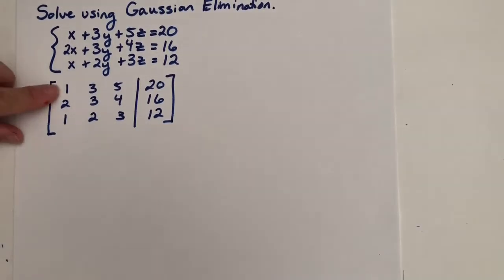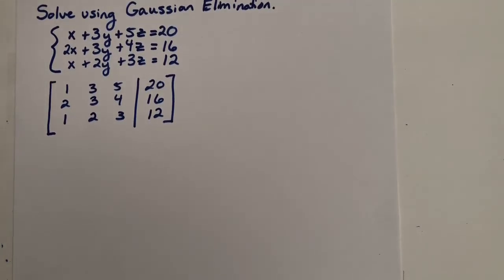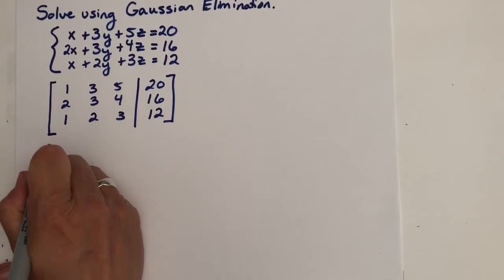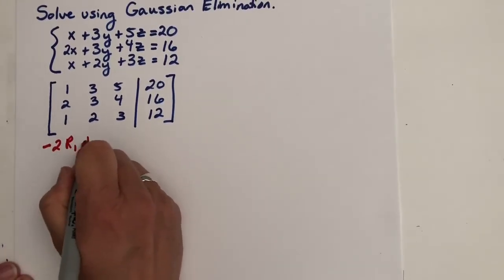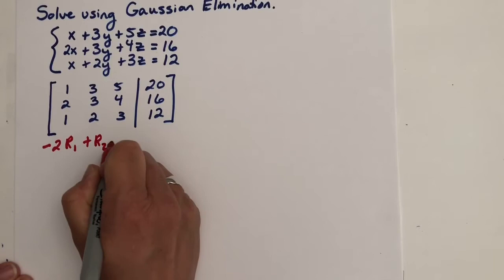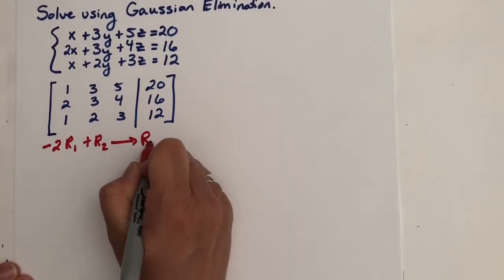Remember, I want a 1 here to begin and I already have it. So I would need zeros beneath. So let's make this become a zero here by multiplying by negative 2 and adding. So let's write the roadmap for somebody to follow. Negative 2 times row 1, we're going to add that to row 2 and we're going to put it in row 2.